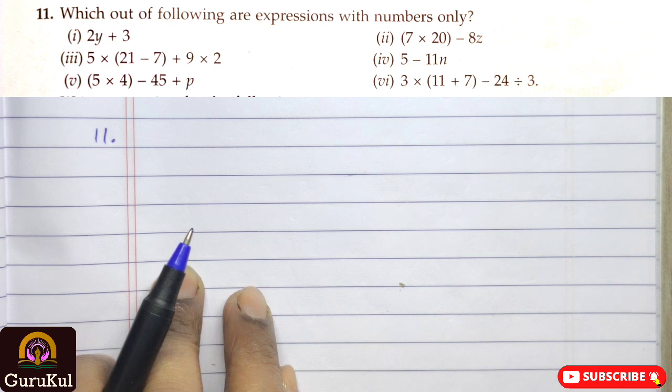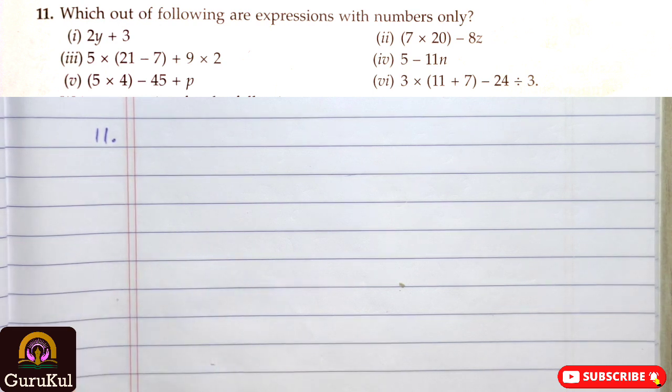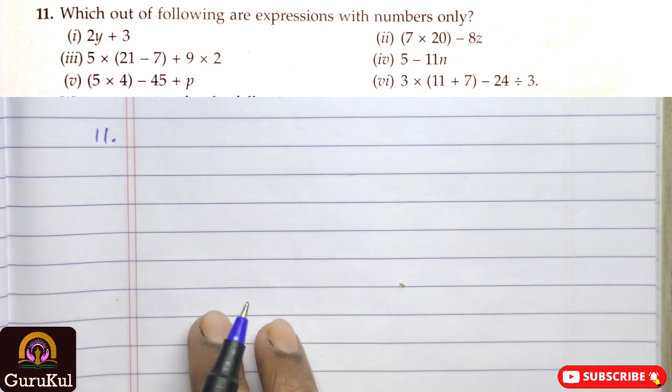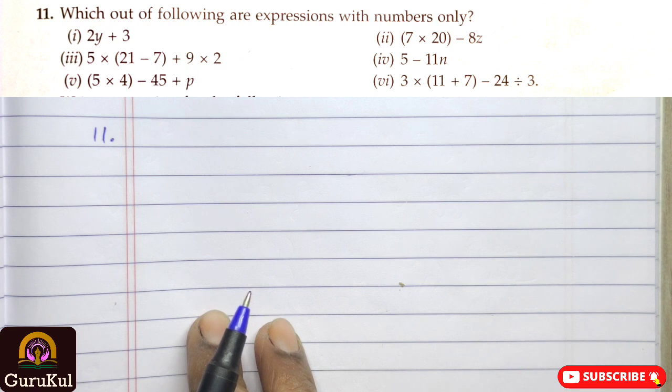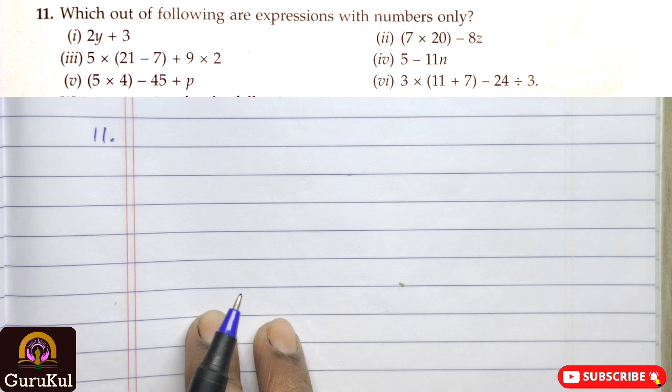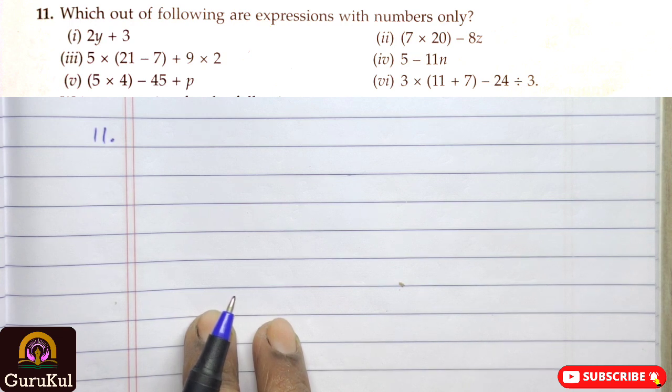So, this expression has just numbers. So, sub part 3, number 4, 5 minus 11n, again, we have alphabet here. Number 5, 5 into 4 close bracket, minus 45 plus p. Again, we have the alphabet p here. And, sub part 6, 3 into bracket, 11 plus 7 close bracket, minus 24 divide by 3. So, here again, we can see, that there is not a single alphabet present here. So, sub part 3 and sub part 6 are the expression with numbers only.